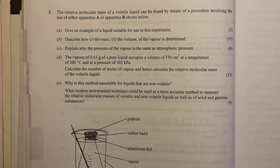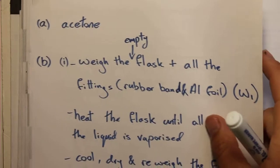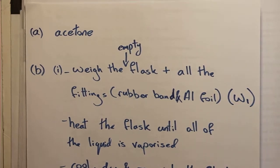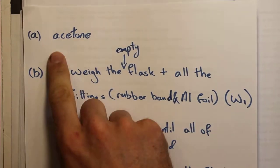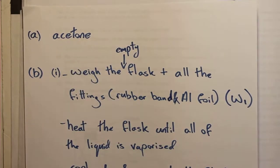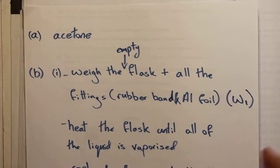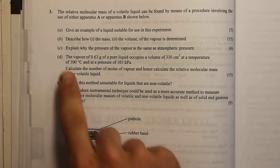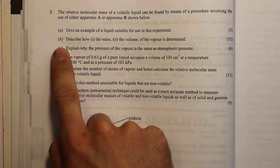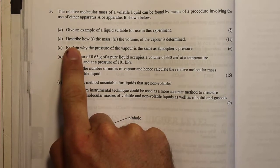The answer to part A is acetone. Acetone is used in nail varnish remover and has a low boiling point, which means it's volatile and therefore suitable for use in this experiment.